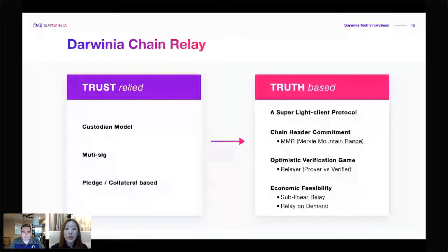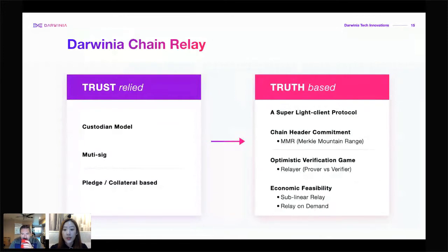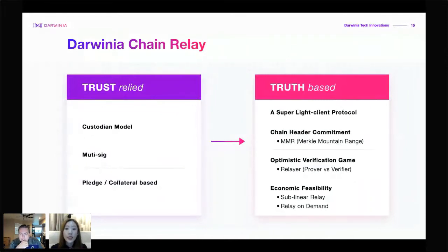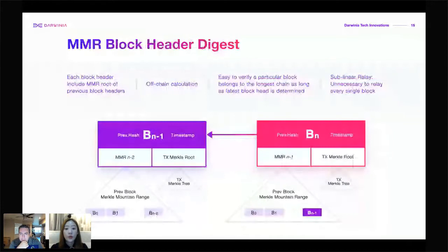The second challenge is how to verify cross-chain transactions in a trustless way. For custodial bridges, multi-sig federation is controlling your assets — meaning a middleman, a third party, is still controlling your assets and doing verification. So with Darwinia's cross-chain bridge, we're doing an innovation called Darwinia Chain Relay — from trust-reliant to truly trustless — completely removing third-party middlemen from control of assets and verification of cross-chain transactions. We're building a super light client protocol using cutting-edge cryptography such as Merkle Mountain Range and optimistic verification to achieve economic feasibility.